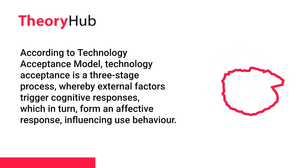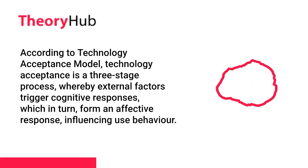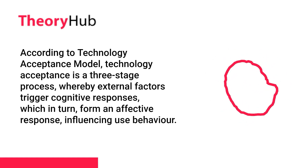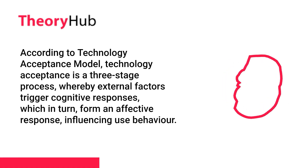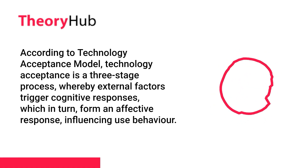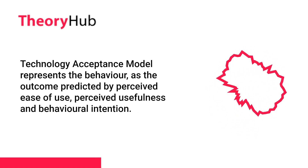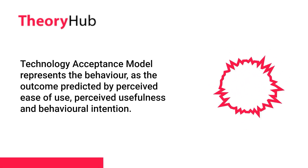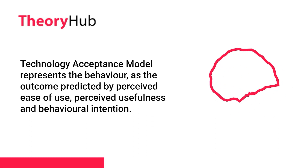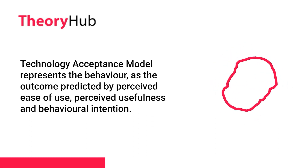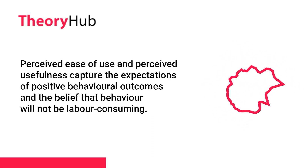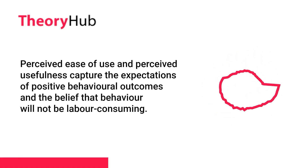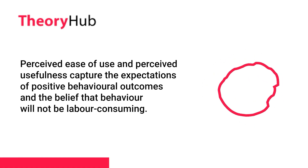According to the Technology Acceptance Model, technology acceptance is a three-stage process, whereby external factors trigger cognitive responses, which in turn form an affective response, influencing use behavior. The model represents behavior as the outcome predicted by perceived ease of use, perceived usefulness, and behavioral intention. Perceived ease of use and perceived usefulness capture the expectations of positive behavioral outcomes and the belief that behavior will not be labor-consuming.